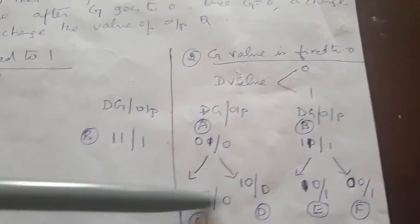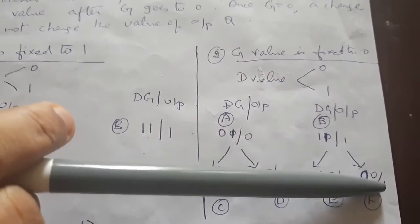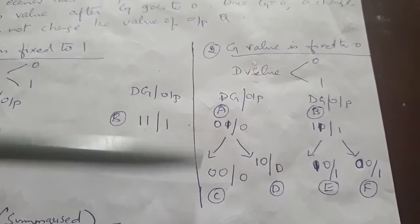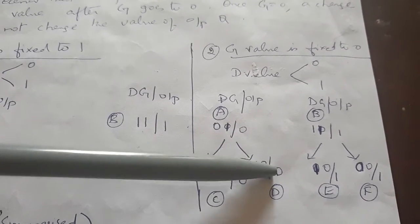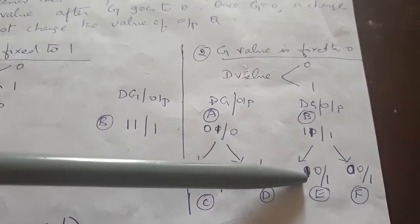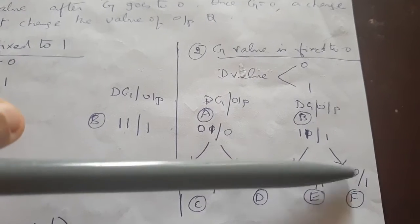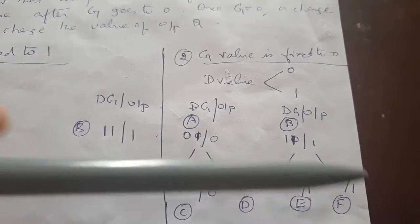Change the conditions according to the parameters, and take the output from the problem statement. When G is 0 and D is 1, output is 0. When G is 0, output will retain the previous condition — it will retain 1. After doing this flow table, when writing a primitive flow table, variables must be assigned with a steady state condition.